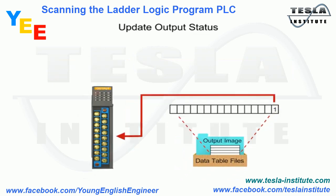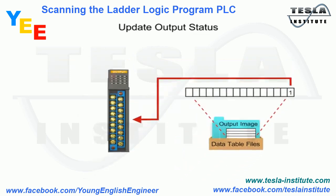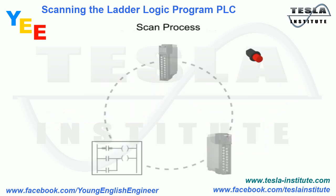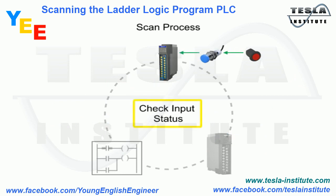In the last step of the scan, the outputs are energized or de-energized as defined in the output table. After the three steps of the scan are completed, the scan cycle is repeated.